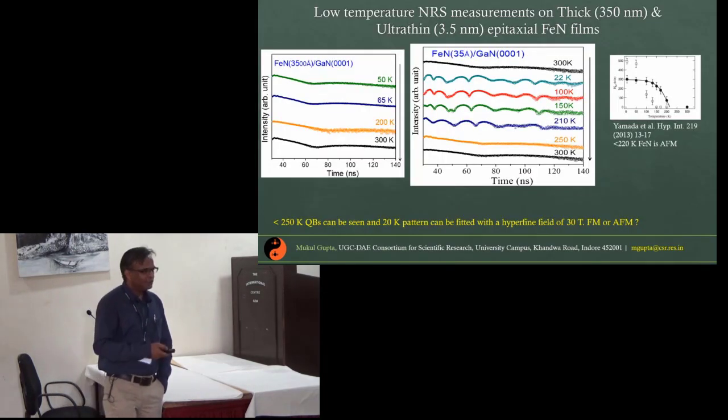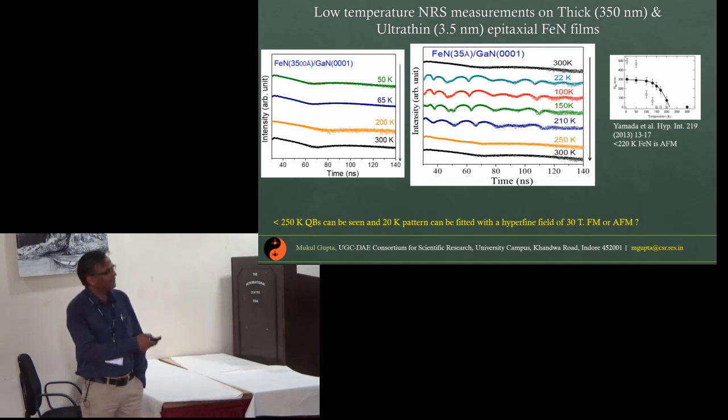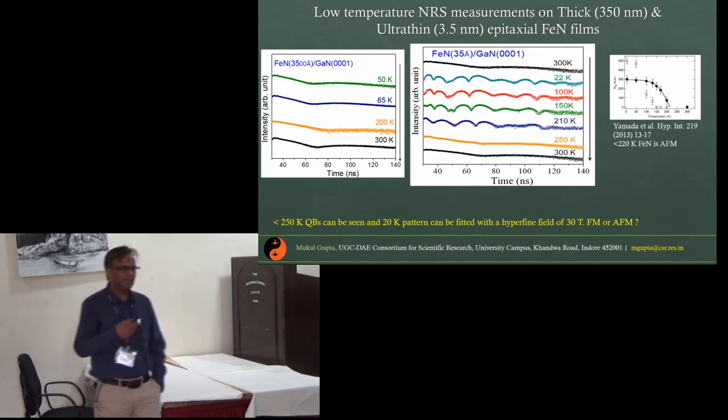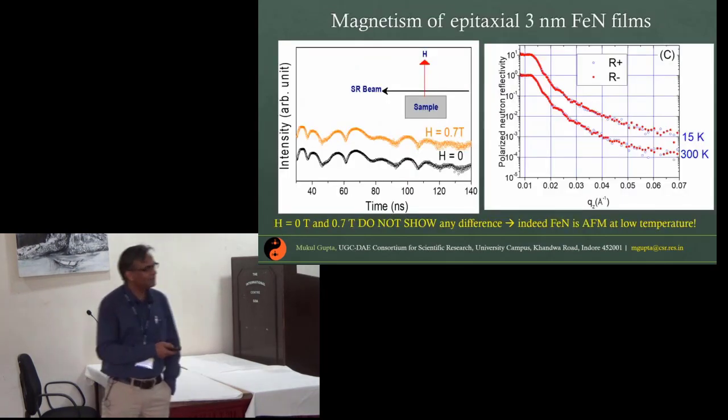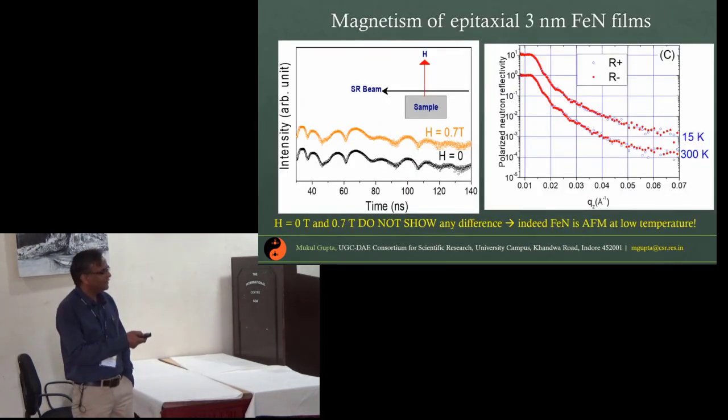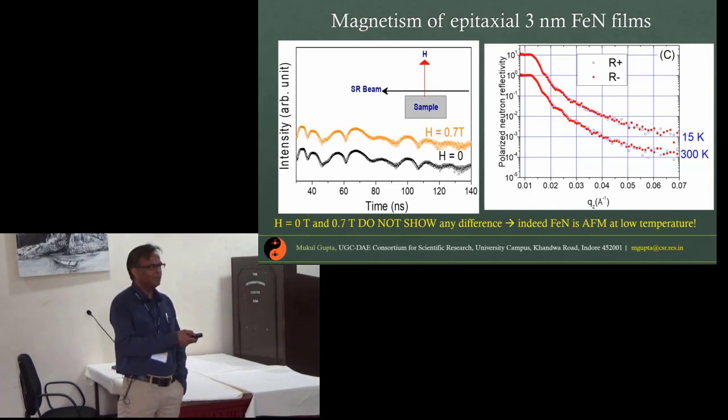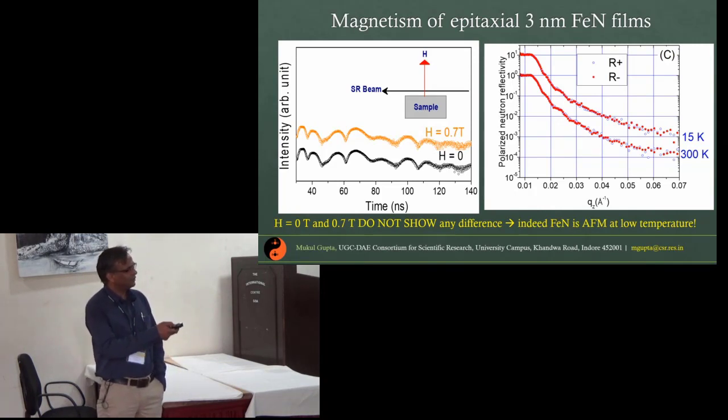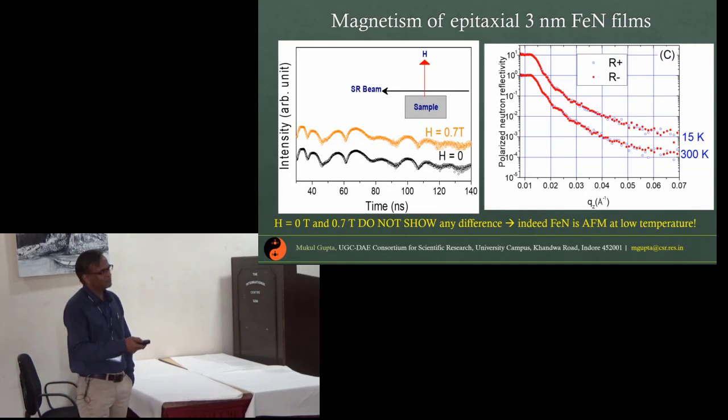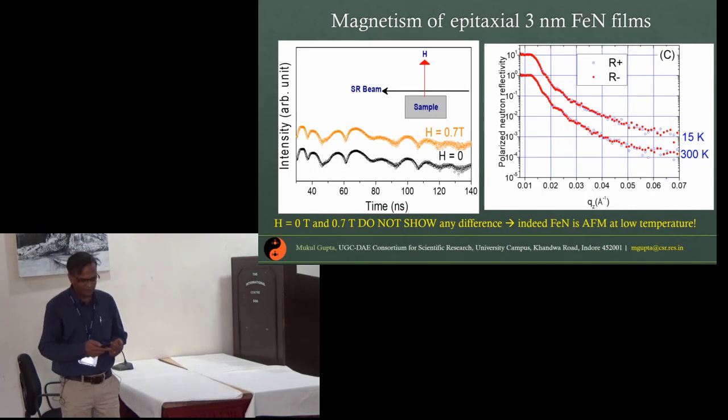Then we did nuclear resonance scattering measurements. When we have a thick film of 350 nanometer you cannot really see any changes, but here a magnetic structure evolves as we cool down and this actually corresponds very well to the antiferromagnetic type transition that was predicted. To confirm the nature of magnetism we applied a magnetic field, and from polarized neutron reflectivity measurement we confirmed that the samples are not ferromagnetic, which means essentially they have an antiferromagnetic ground state.